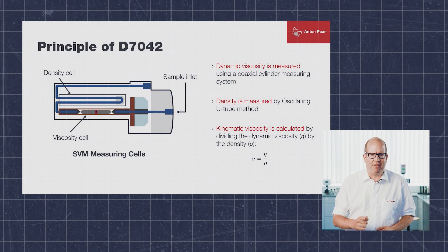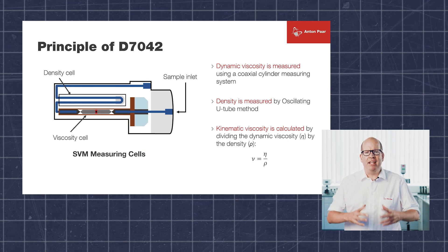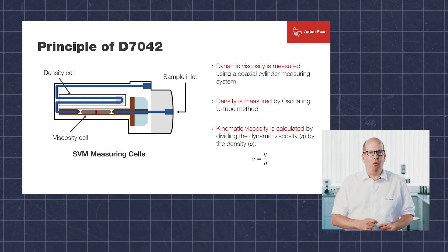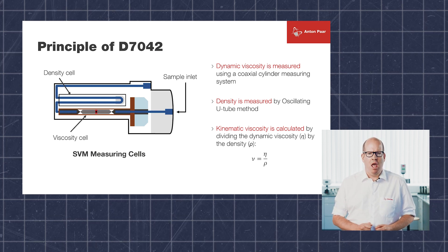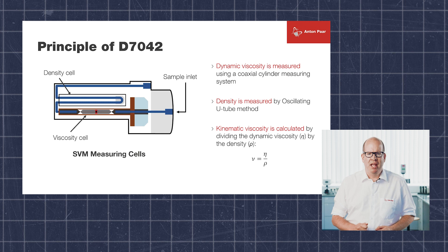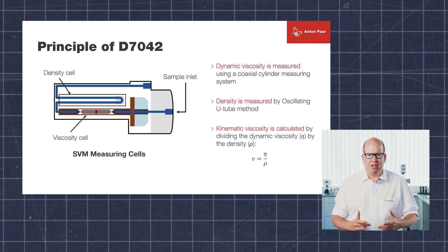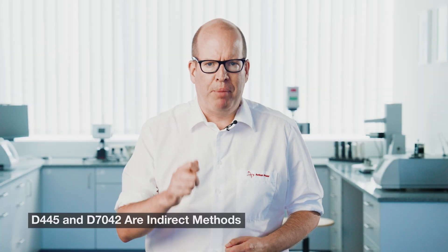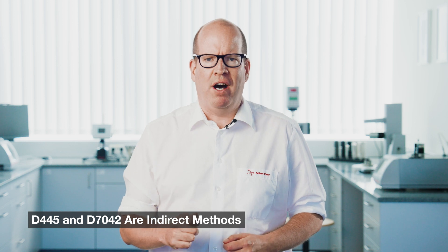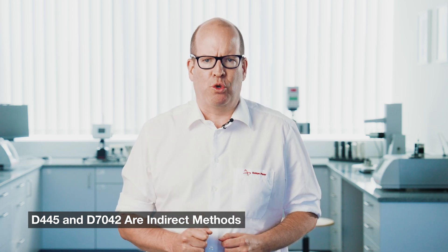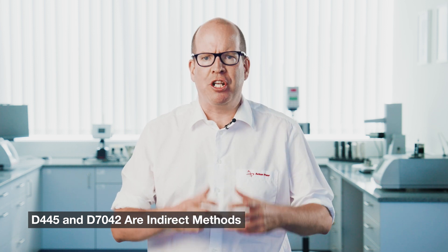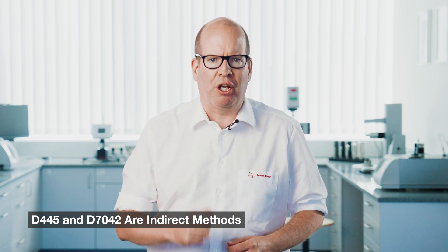ASTM D7042, on the other hand, is the more modern method. Initially approved in 2004, it's now widely accepted. D7042 involves calculation of kinematic viscosity via measurement of dynamic viscosity and density. Important to note: both ASTM D445 and D7042 are indirect methods — the kinematic viscosity is not measured directly, but calculated.